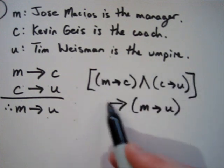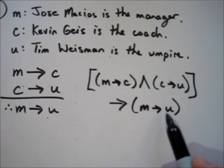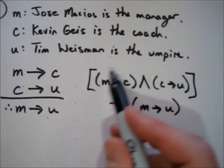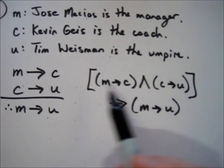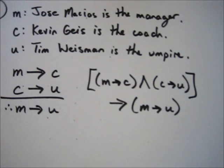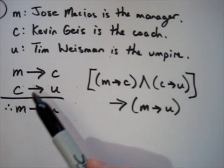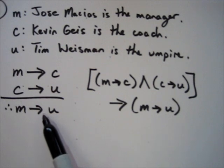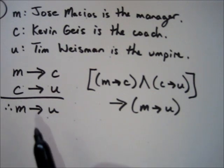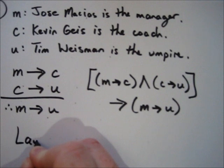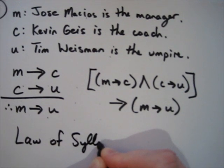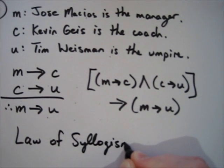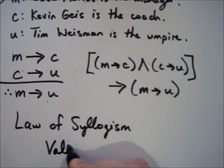If we construct that truth table and find that the answer column is all trues — meaning the statement is a tautology — then the argument is valid. Another way is to compare to the table on page 155 and check for standard forms. Looking there, you'll notice this is an example of the law of syllogism, and therefore the argument is valid.